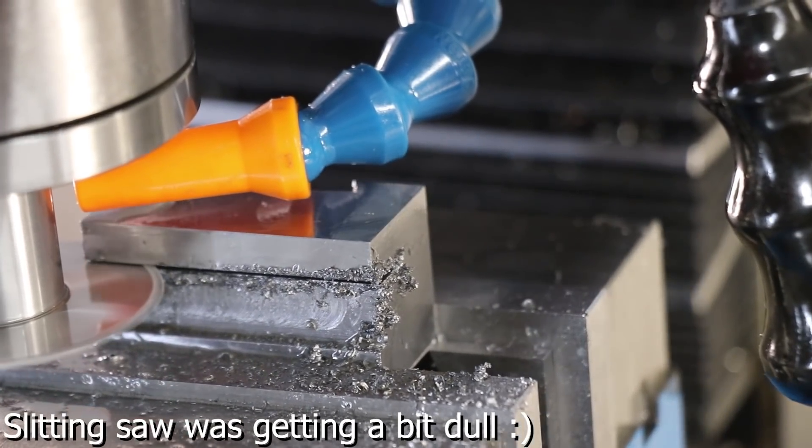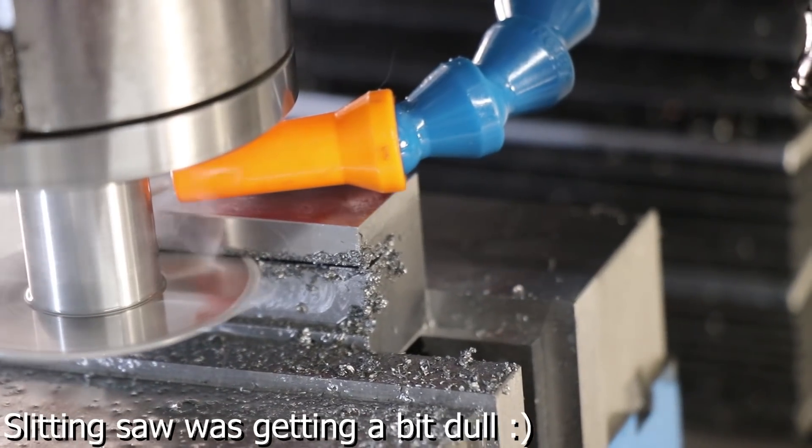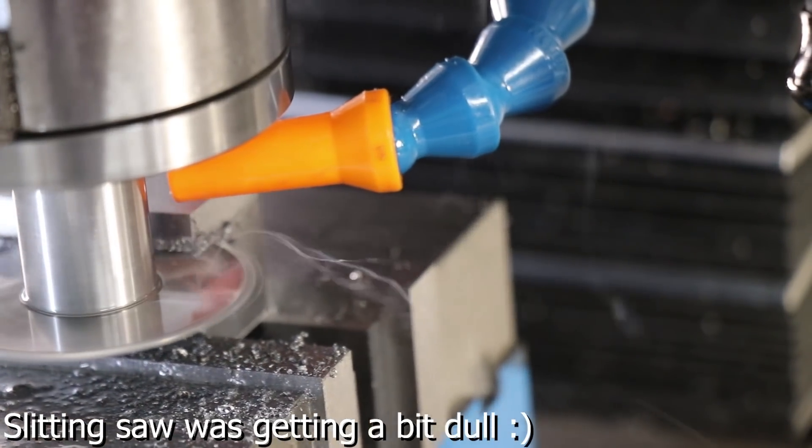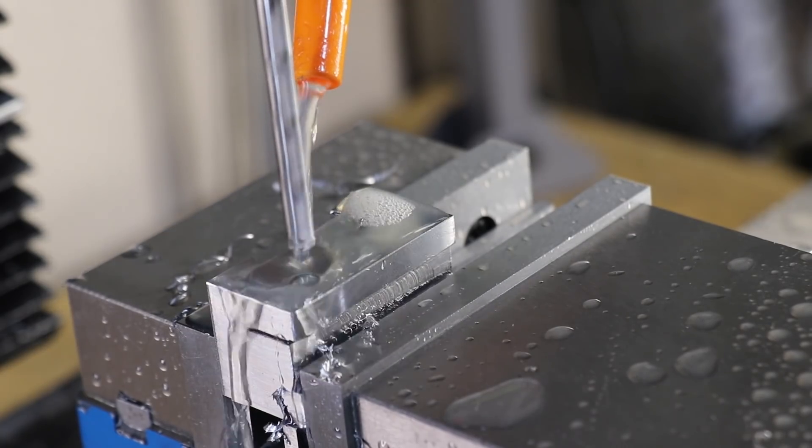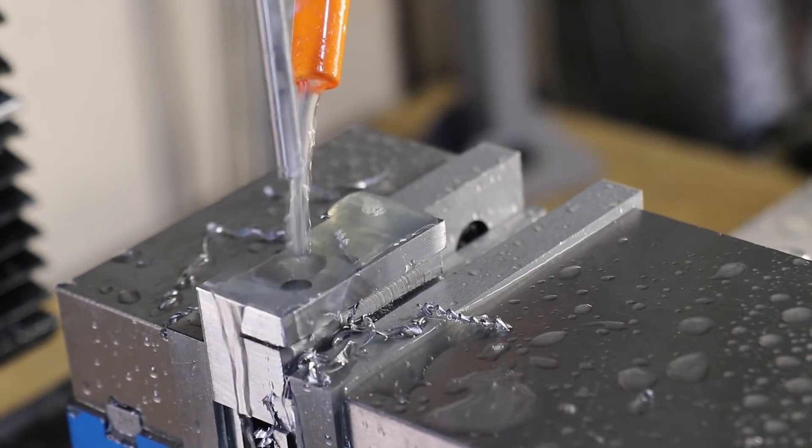Next I'll set up the mill to use the slitting saw so I can cut a very thin slot into the tool holder. Finally I'll drill four m6 holes so I can clamp the parting blade in place.